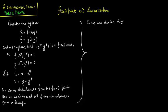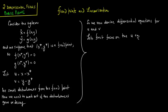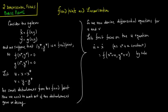We now derive differential equations for u and v. Let us first focus on the u equation. u-dot equals x-dot, and since x* is a constant, this equals f(x* + u, y* + v), by simple substitution.